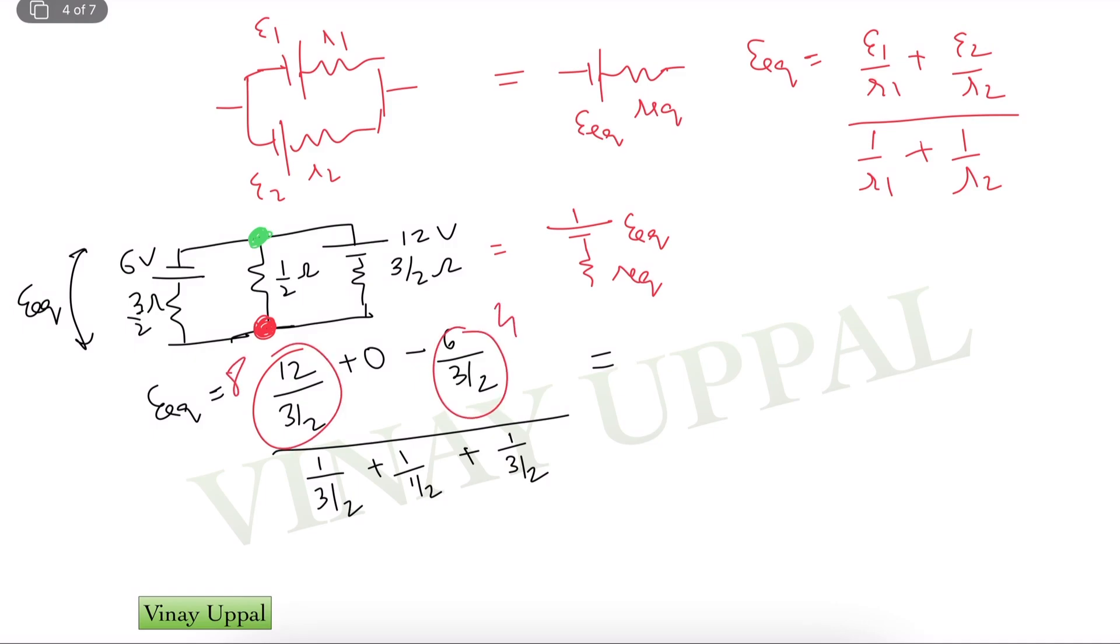So this equivalent will be equal to 8. This will become 4, this will become 4. This is 2 by 3 plus 2 by 3, 4 by 3 plus 2 will be 10 by 3. So 4 divided by 10 by 3, 12 by 10 will be 1.2V. So E equivalent is 1.2V. This means that all the branches across, there is 1.2V with the green point at the higher potential because our E equivalent is positive.